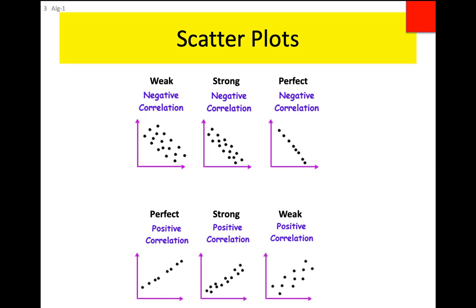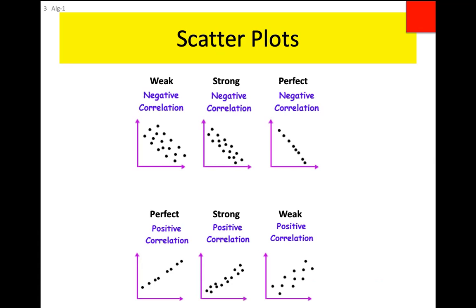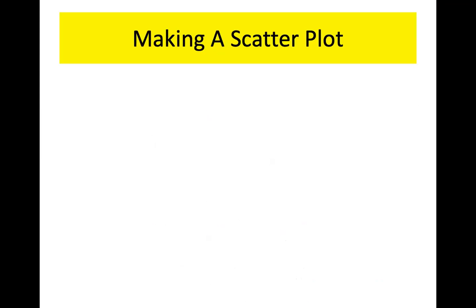Weak correlation just means the dots are spread out but you can still see a pattern. For instance, when looking at the efficacy of the COVID vaccination, a scatter plot would look more spread out — because some people can get the vaccine and still catch COVID. Strong or perfect correlation means the dots are really close together.